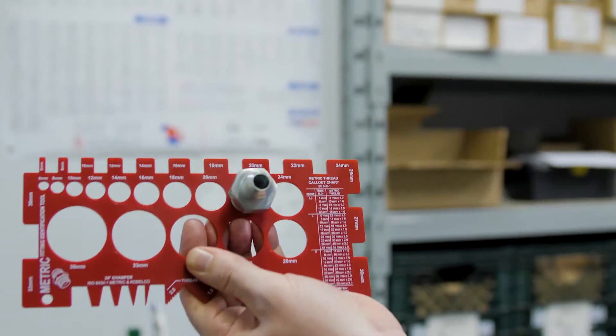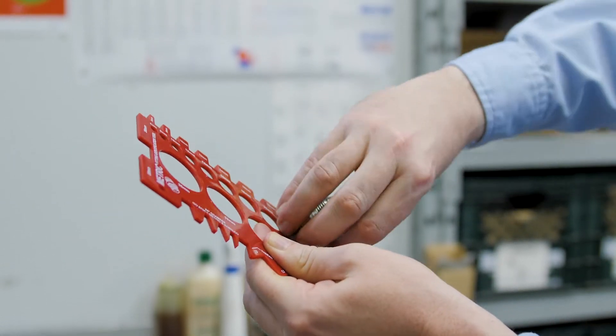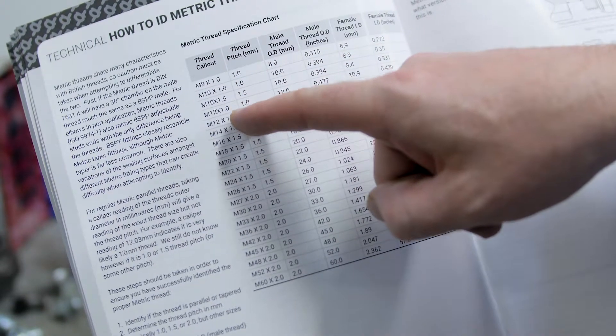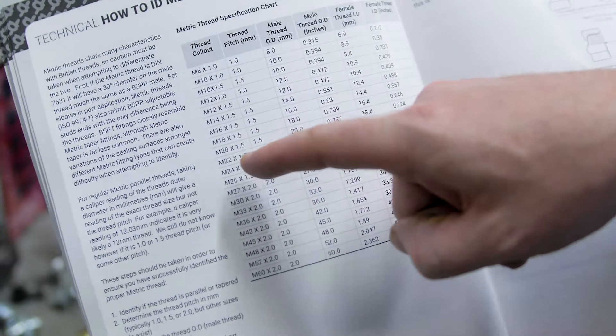For example, a fitting you are trying to identify most closely fits a 22mm port with a pitch of 1.5mm between threads. By looking at the chart, this appears to be a match for an M22 by 1.5mm thread.